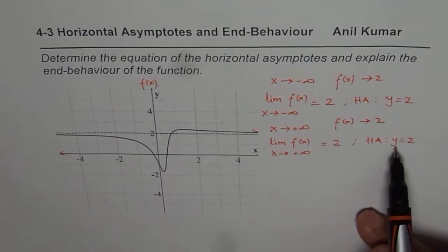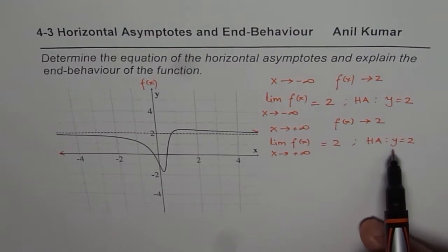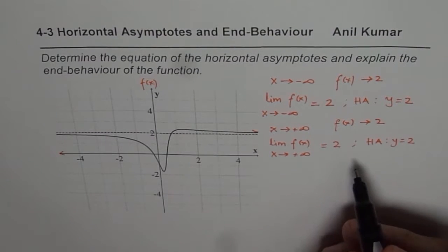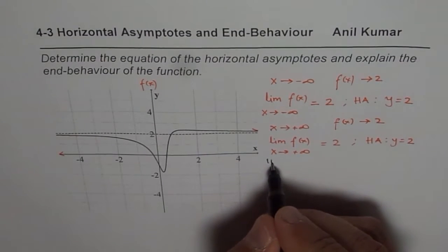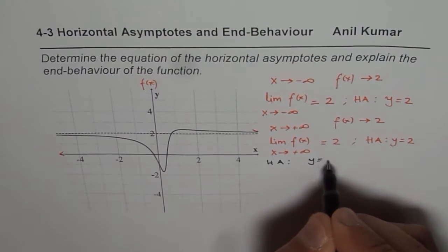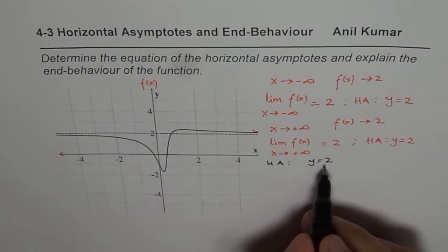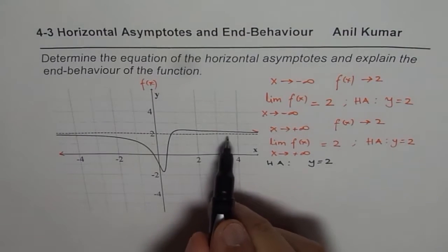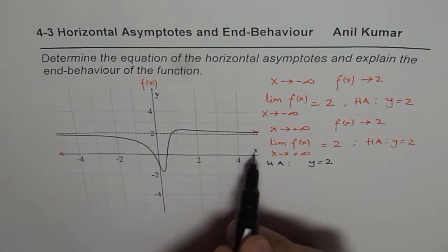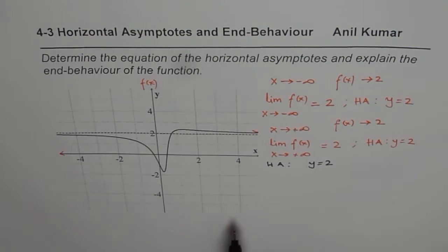At times you may have two different horizontal asymptotes. But what we get here is one horizontal asymptote, which is y equals 2. It is the value which the function approaches as x approaches infinitely large — negative or positive. That is how we get the horizontal asymptote.